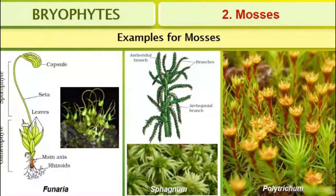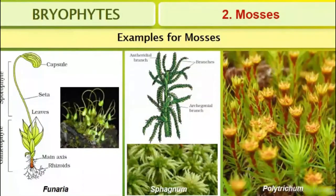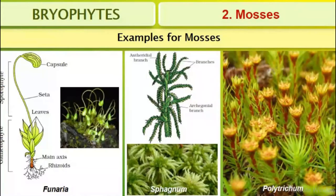The sporophyte consists of foot, seta, and capsule. That's all about the study of bryophytes. We have studied the general characteristics and importance of bryophytes, the two types — liverworts and mosses — and their life cycles. Thank you for watching.